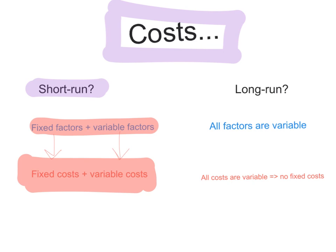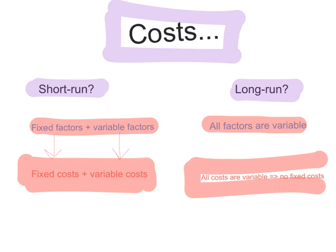In the long-run, it's slightly different. In the long-run, all factors are variable — this is the period that it takes for the firm to be able to change or vary all its inputs. Therefore, in the long-run, because all factors are variable, all costs are also variable and there are no fixed costs. This video will focus more on the short-run, where there are fixed costs as well as variable costs.